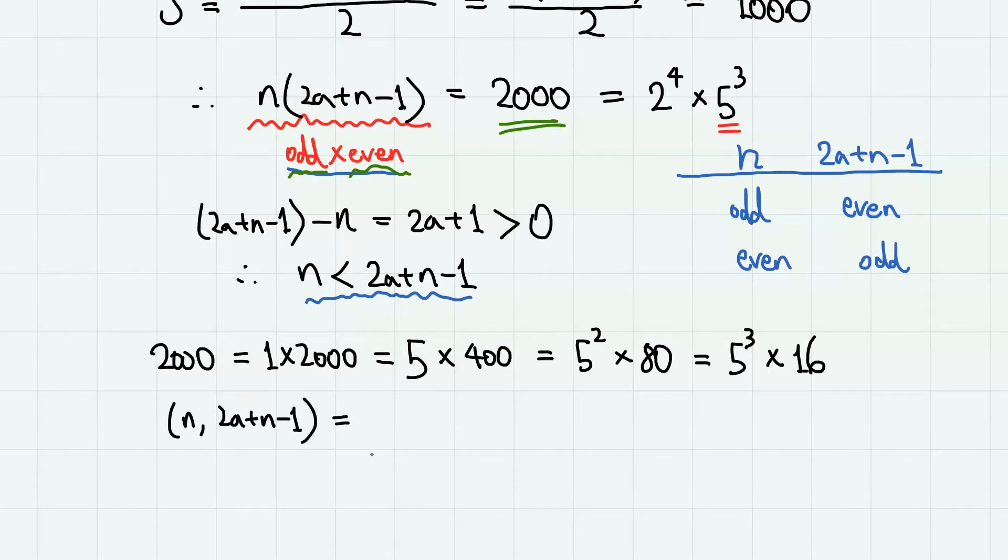And using the fact that n is the smaller number between n and 2a plus n minus 1, we must have 1 and 2000, or 5 and 400, or 25 and 80. And lastly, from here, 16 is the smaller number. So we have 16 and 125.